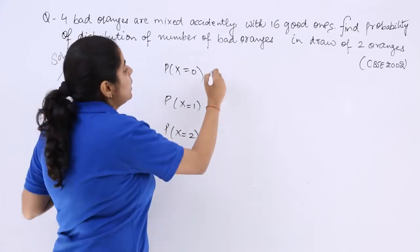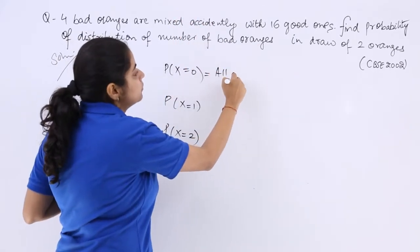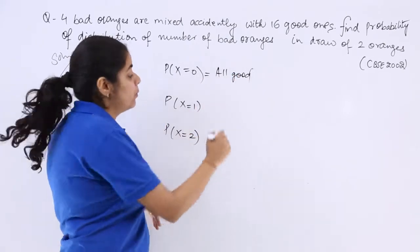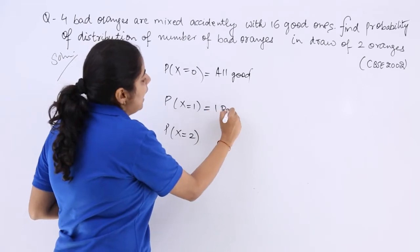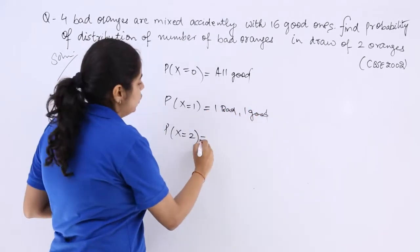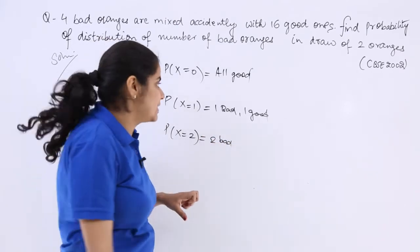When X equals 0 means whatever the 2 oranges you are going to take out all good because 0 defective or 0 bad. X equals 1 means 1 would be a bad orange and 1 would be from the good orange. 2 means both are bad oranges, so let's see how to do it.